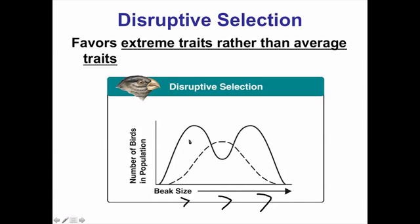You start to see more and more birds with small beaks, more and more birds with large beaks, and less with the medium-sized beaks. We see this roller coaster shape going on, and it's favoring the extremes.